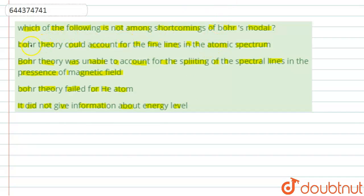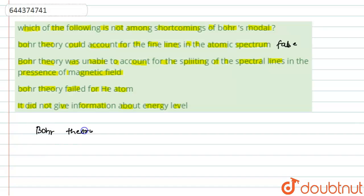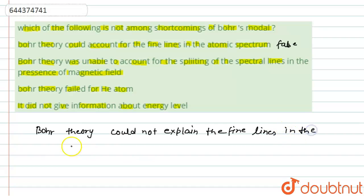According to the first option, Bohr's theory could account for the fine lines in the atomic spectrum. This statement is false, because Bohr's theory could not explain the fine lines in the atomic spectrum.